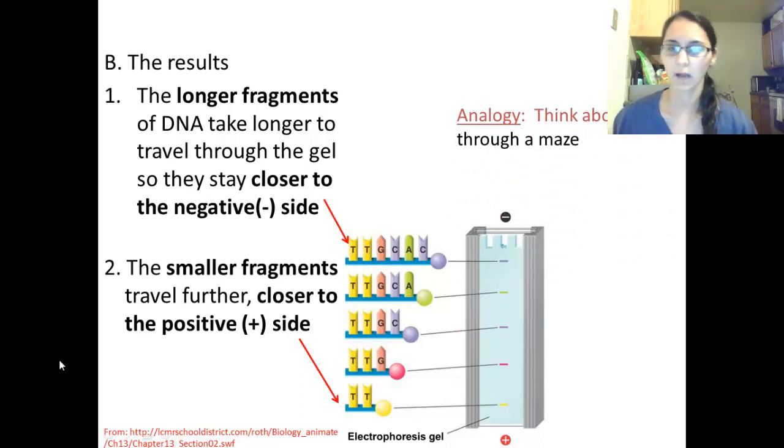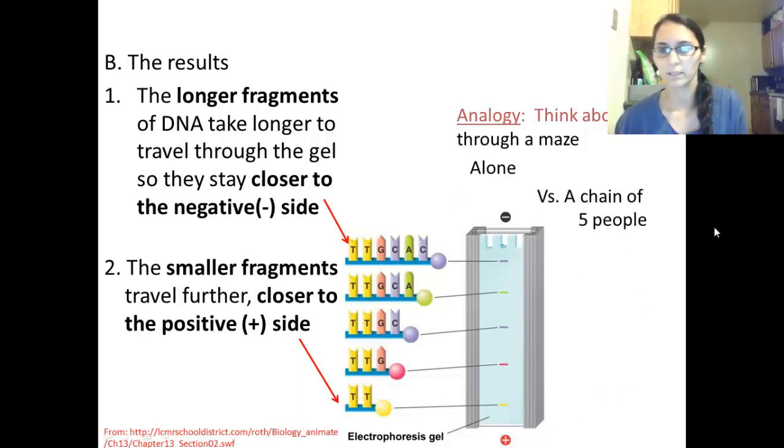Something to think about when thinking of the DNA moving through the gel is think about going through a maze. If you were to go through a maze alone, it would probably be faster than if you were to go through a maze linking hands with four other people. If it was a chain of five people, it would be harder and longer to navigate through the maze.